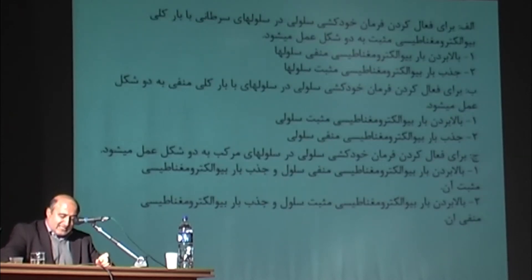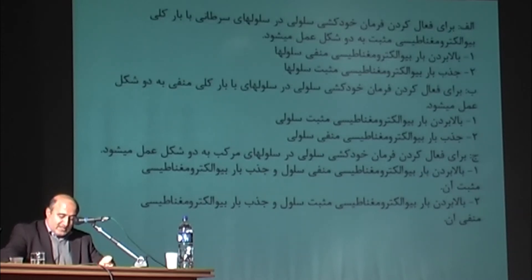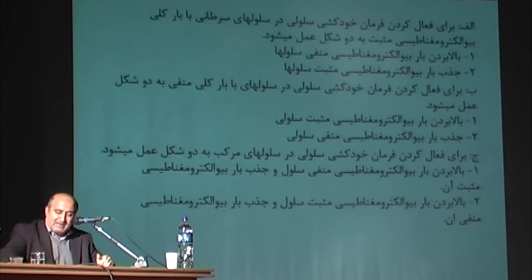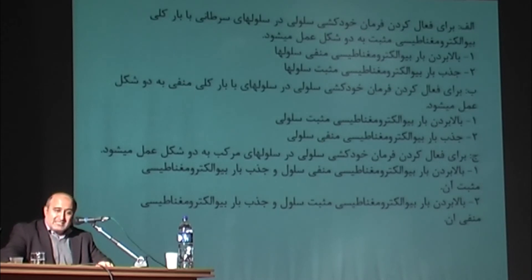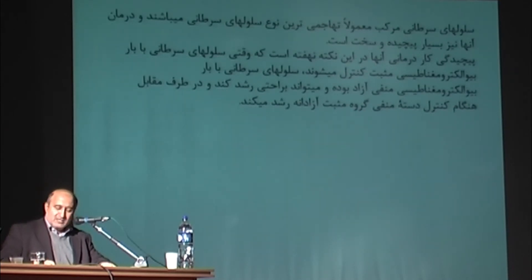The arrangement of the performing program in the cells can be as follows: 1. By running plan number 1, we wait until the overall positive bioelectromagnetic cells commit suicide. 2. Then we make plan number 2 function, until the cells that have overall negative bioelectromagnetic charge commit suicide. The implementation of the two plans should be very accurate and calculated in order to prevent the growth of the opposite group when a group with negative or positive bioelectromagnetic charge commits suicide.